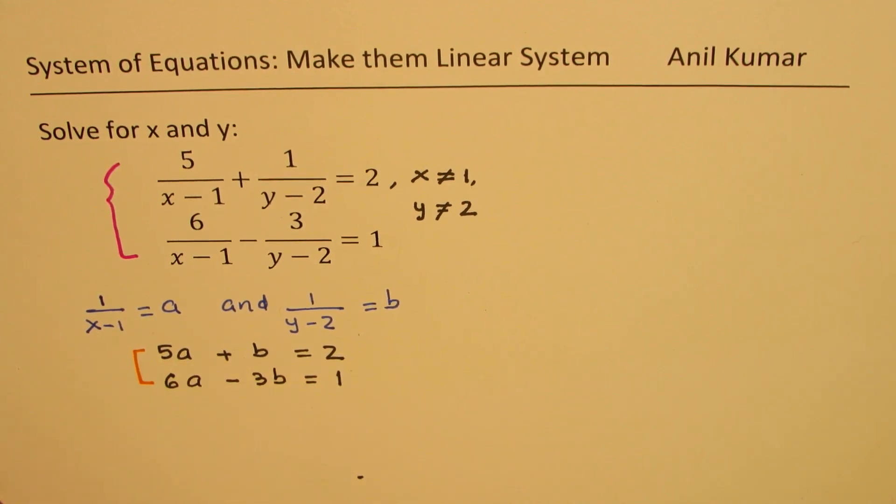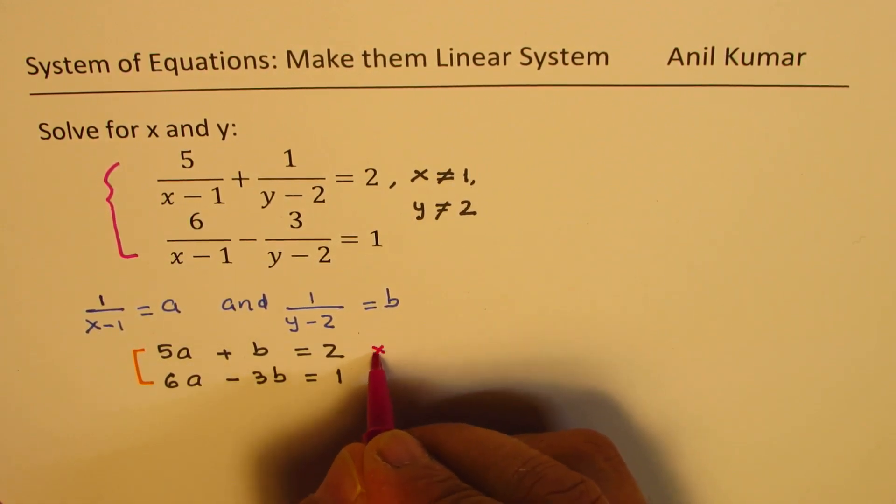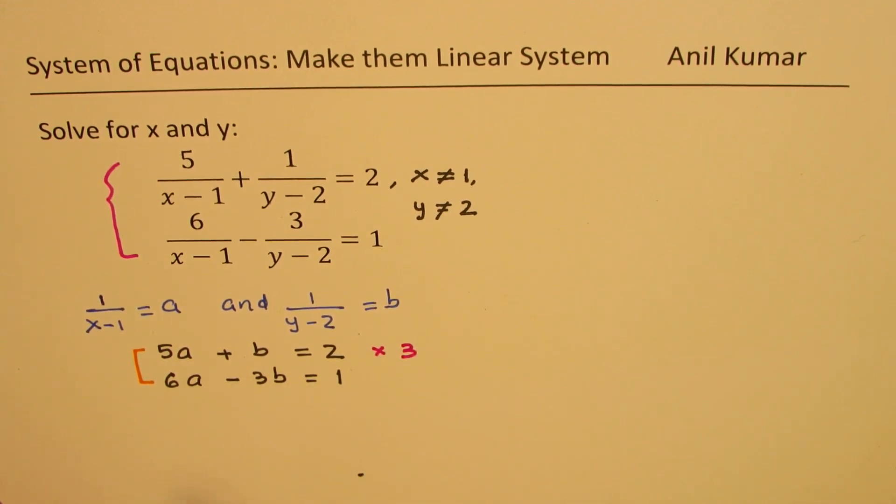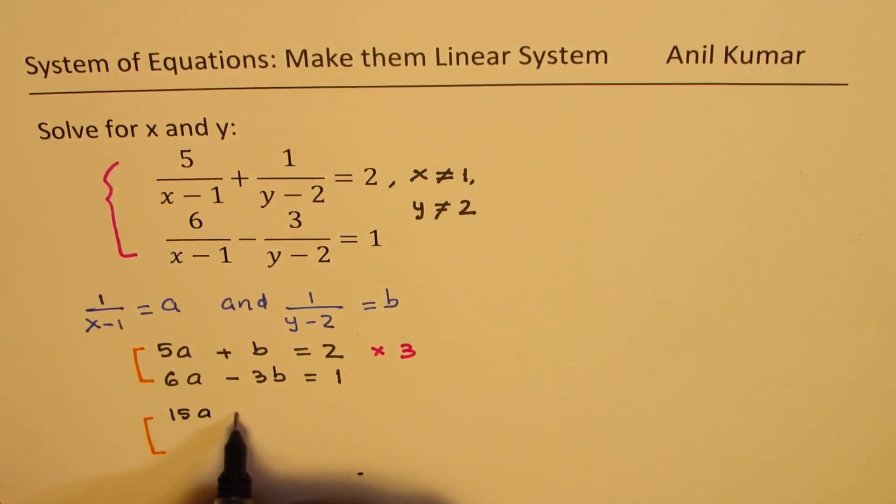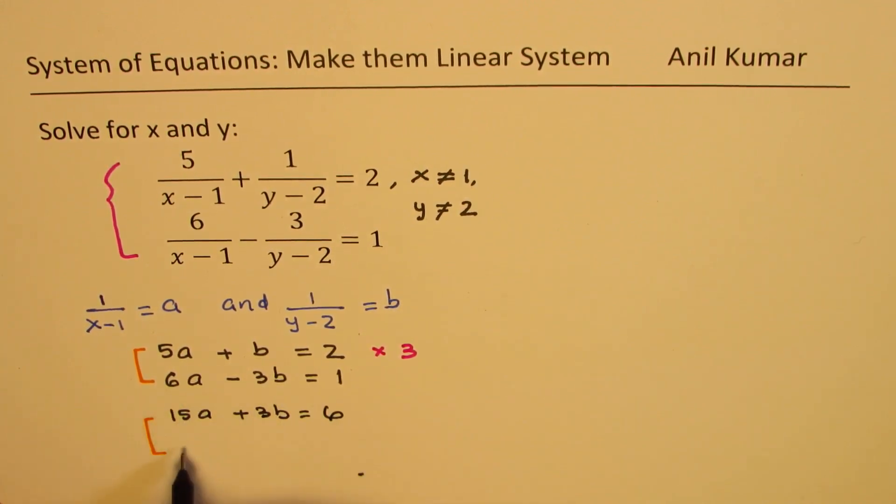Now to solve this, what we could do is multiply the first equation by 3. So if we do that, then the system becomes, let's rewrite this system of equation. 5 times 3 is 15. So we get 15a plus 3b equals 6, leaving the second one as such, 6a minus 3b equals 1.